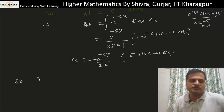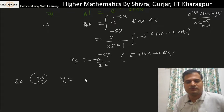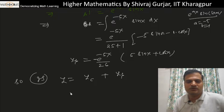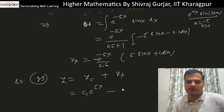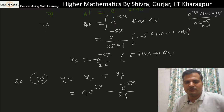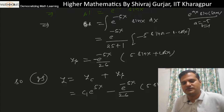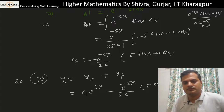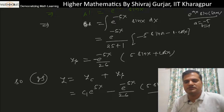So the particular integral is y_p = a · e^(5x) = e^(−5x)/26 · (−5 sin x − cos x) · e^(5x). The general solution is y = c₁·e^(5x) + e^(−5x)/26 · (5 sin x + cos x). This is the answer.